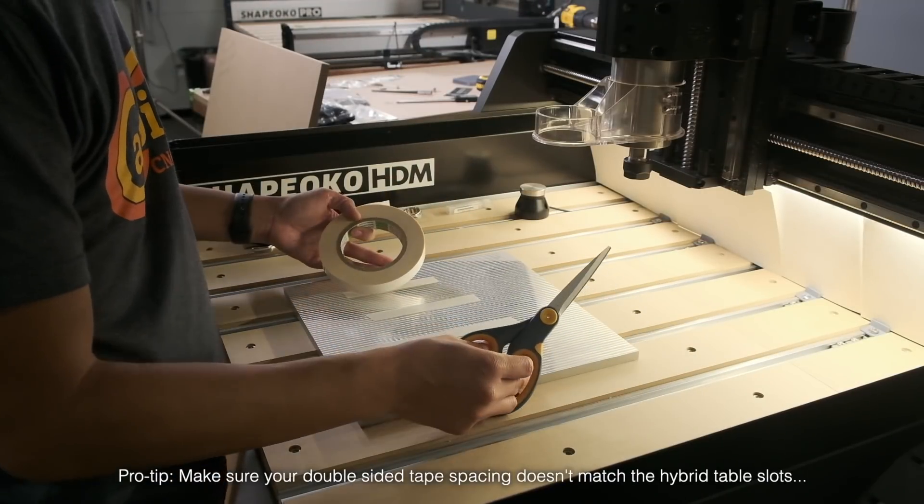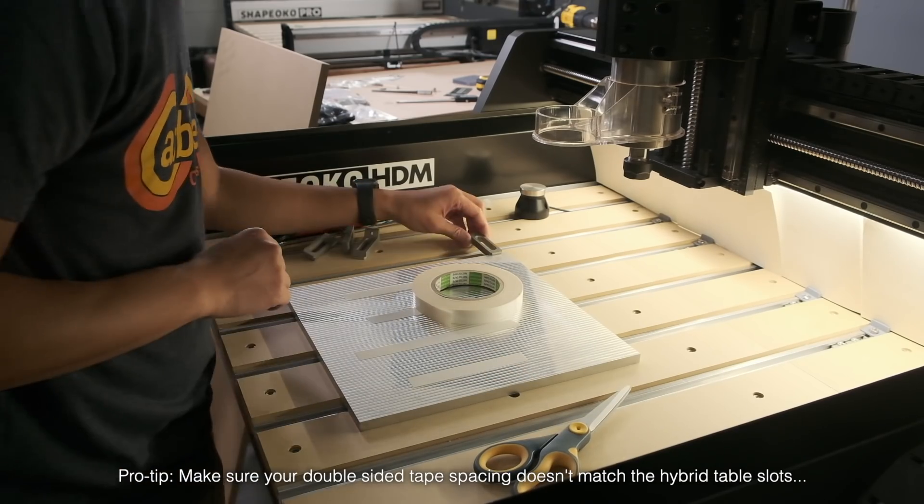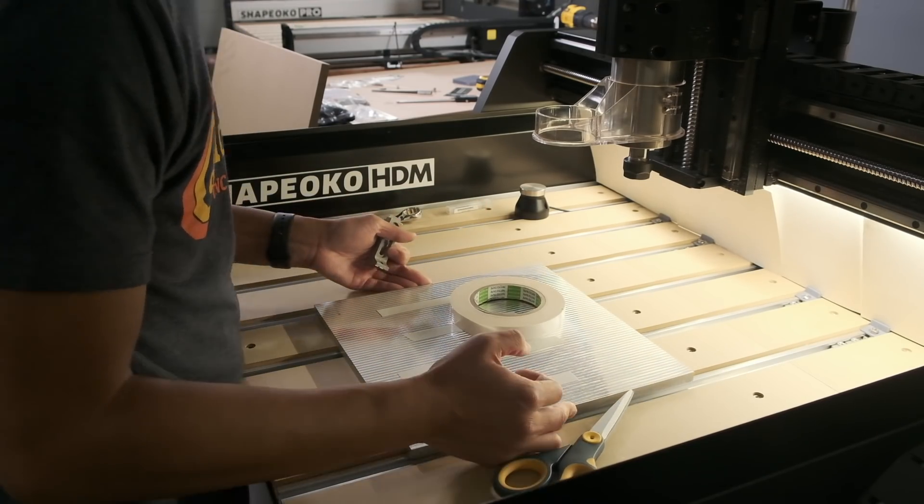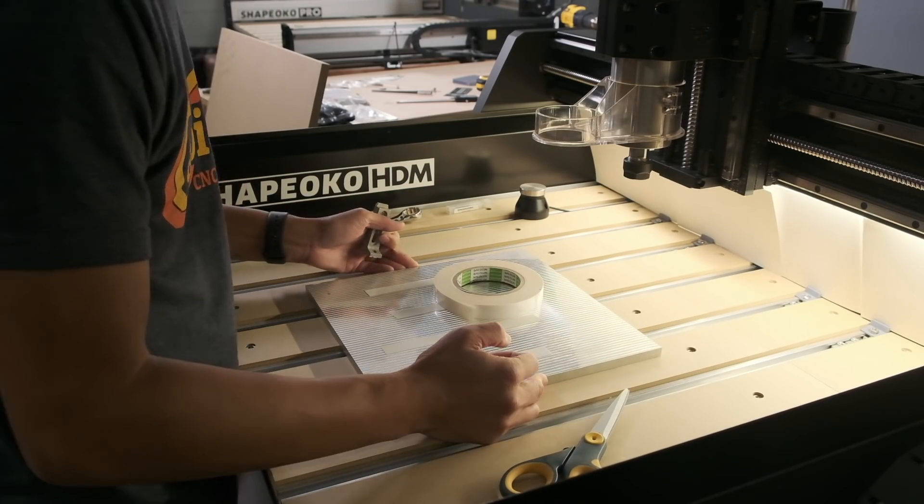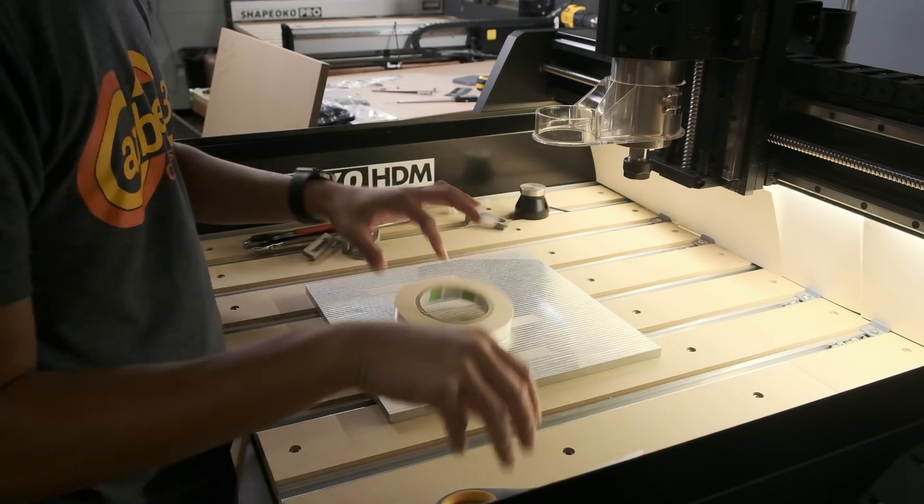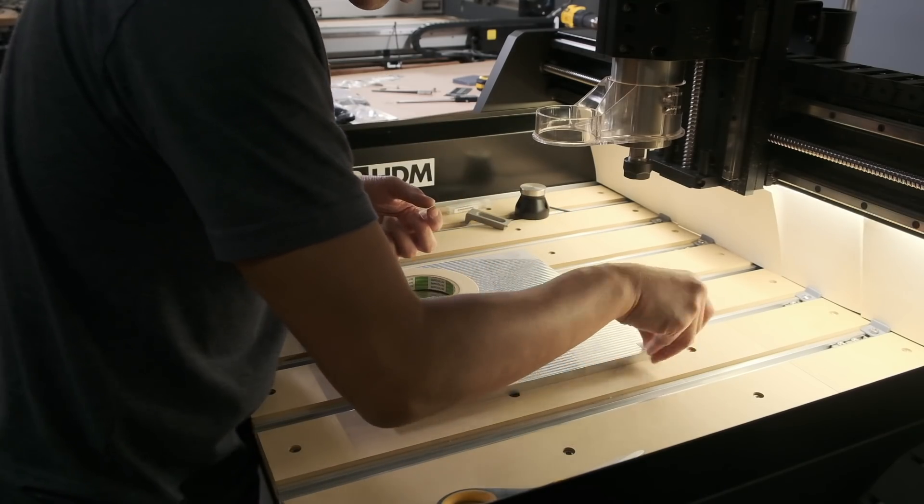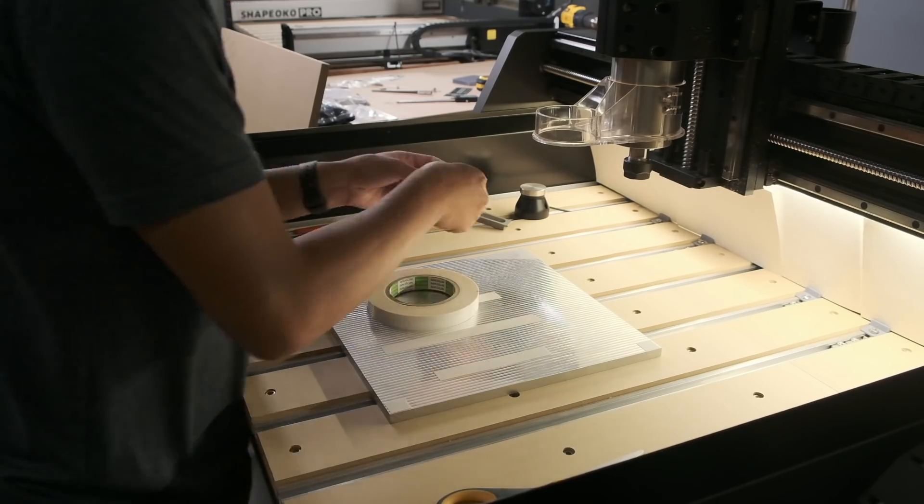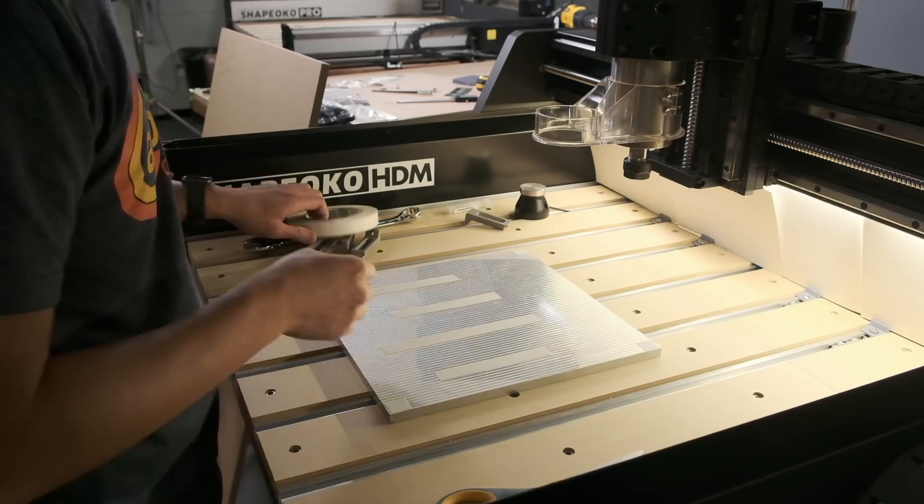I'm putting a couple strips of double-sided tape on the bottom of my aluminum plate, which was previously surfaced so I know it's dead flat. Warped materials are the kryptonite of adhesive workholding. I'm also putting a small piece of tape in each corner of my stock where I'm going to clamp it.